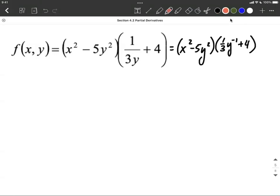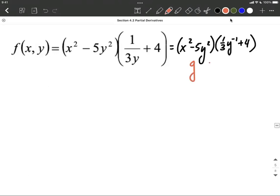Now I'm going to treat this as though we have two things multiplied together and use the product rule as we do these partial derivatives. So I'm going to treat this first set of parentheses as our g, and the second set of parentheses I'm going to call h. And mapping out how the product rule works, it's going to be g prime times h plus g times h prime.